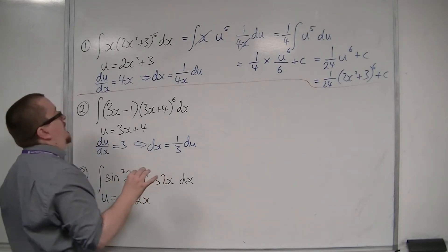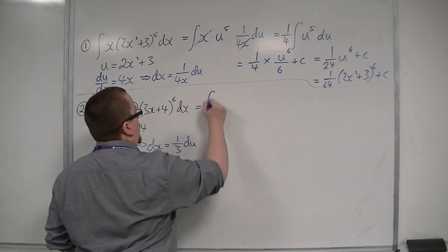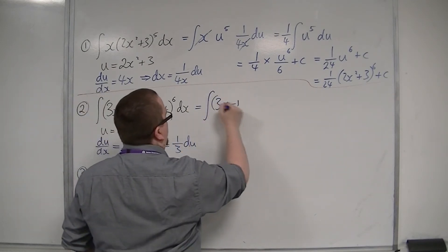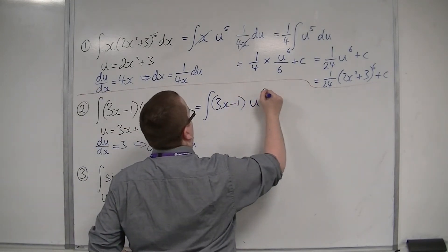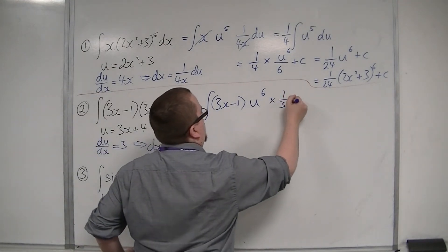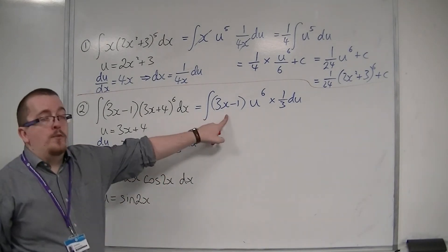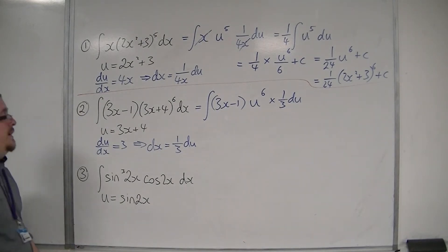Now, the problem here is that when I substitute these in, I have this 3x-1, which I don't currently have a replacement for. I've got the 3x+4, which is u, so u⁶, and the dx is 1/3 du. The problem here is that there's not any cancellation here with the 3x-1. So I need to find something that will substitute it.